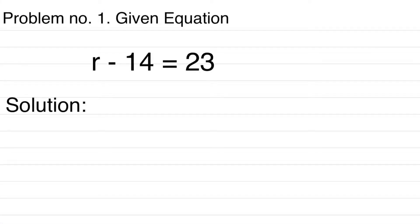For our number one example, r minus 14 equals 23. In order to solve the variable r by itself, you are going to combine the negative 14 to 23 by adding positive 14 on both sides of the equation.